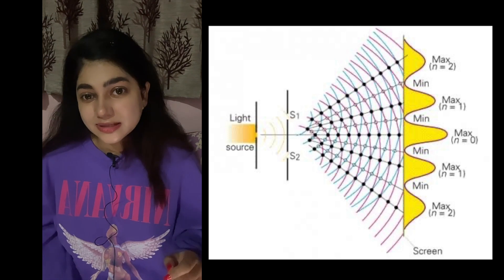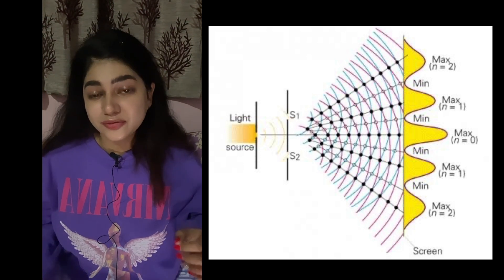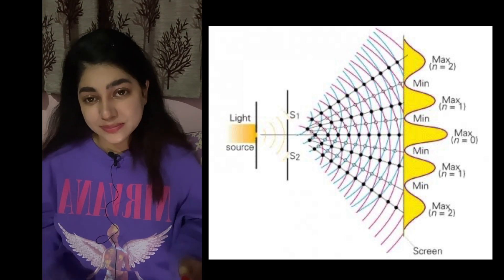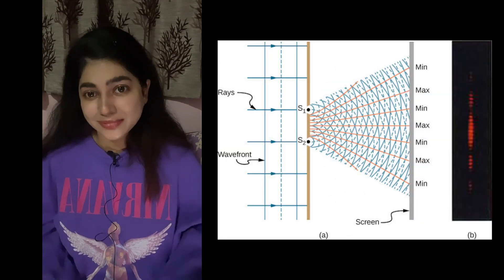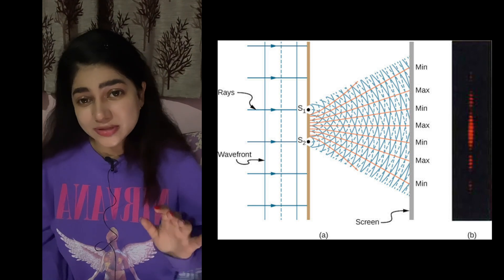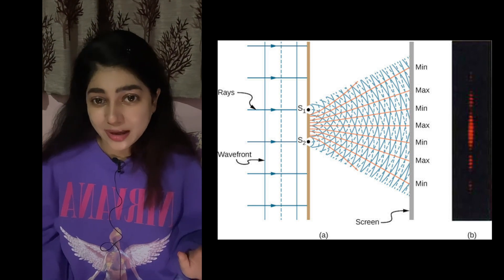So in the double slit experiment, we have a screen with two small slits. Behind it we have a light source - I used a laser light. When we pass the light through these two slits, something extraordinary happens.